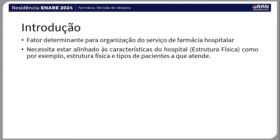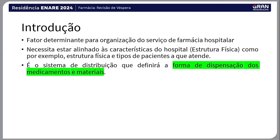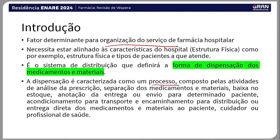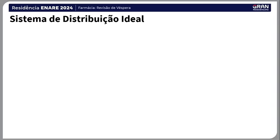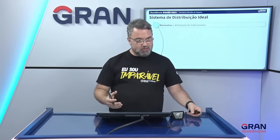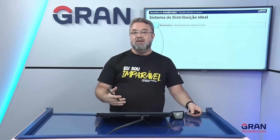O sistema de distribuição de medicamentos num hospital é determinante para a organização do serviço. A dispensação é caracterizada como um processo composto por atividades de análise da prescrição, separação dos medicamentos e materiais, baixa no estoque, anotação de entrega, envio até um determinado paciente. É um processo com complexidade. O sistema ideal deve se adaptar à estrutura do hospital — de pequeno, médio ou grande porte — e ao orçamento disponível para execução.